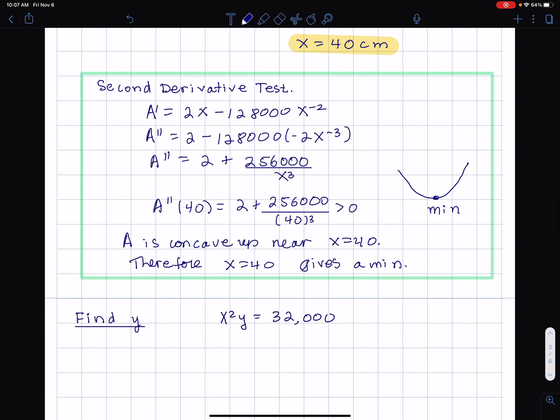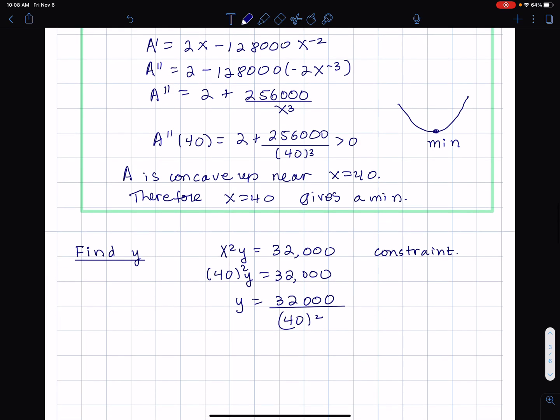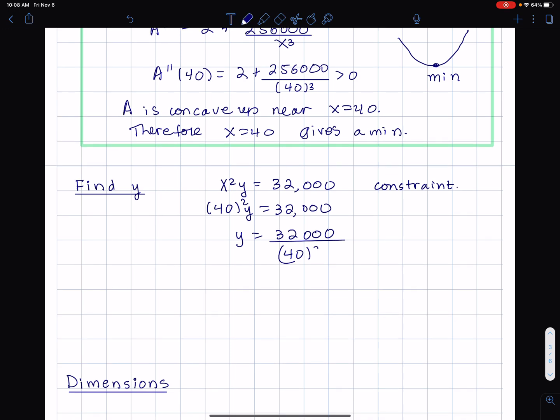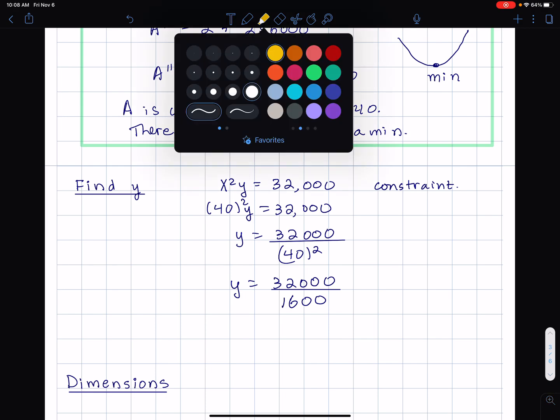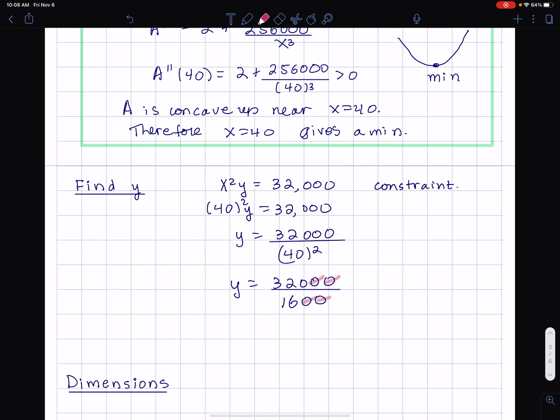Here I have my constraint. And I'm just going to find y by plugging in 40 here. I put in x is 40. y equals 32,000 divided by 40 squared. y is 32,000, 4 squared is 4 times 4 is 16, 10 times 10 is 100. Without a calculator, I can get this. Cancel out the two zeros, and 32 divided by 16 is 2. So I have 20 centimeters.